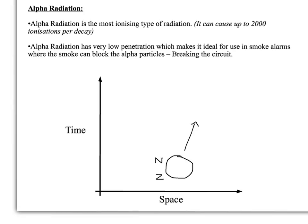In this video, I'm going to talk about some of the key principles involved in types of radiation. Let's start off with alpha radiation. This is the most ionizing type of radiation because it can cause thousands of ionizations per decay. However, it's the least penetrating kind of radiation, which makes it ideal for smoke alarms because when smoke goes into the smoke alarm, it blocks alpha radiation from being able to pass across the gap, which breaks the circuit, triggering the alarm.